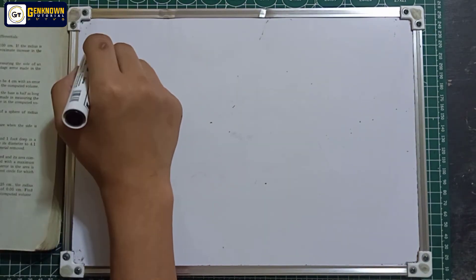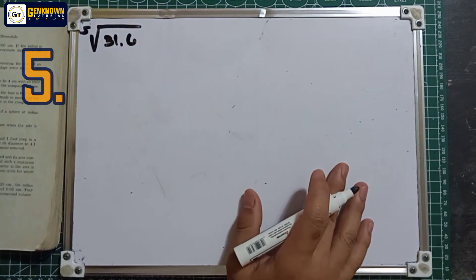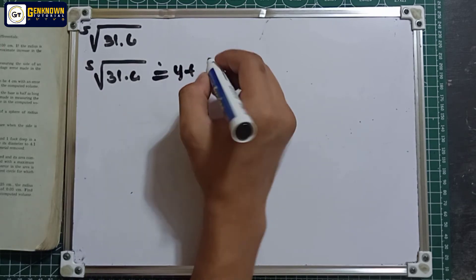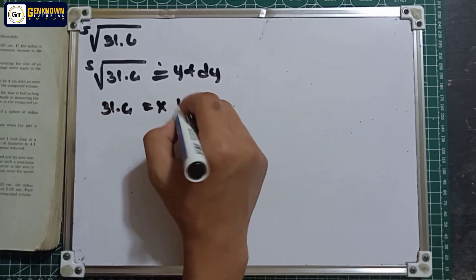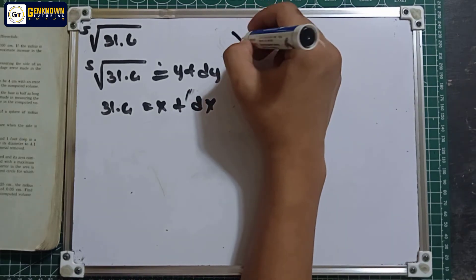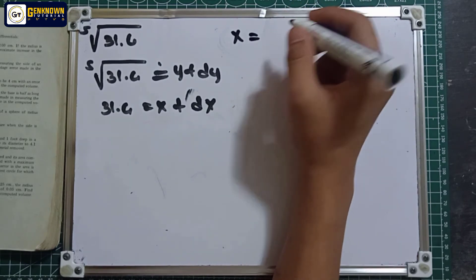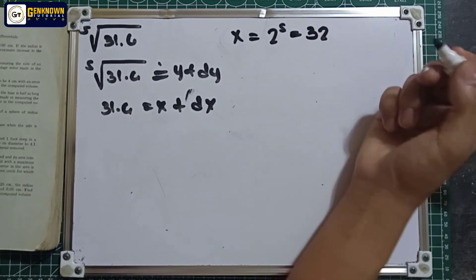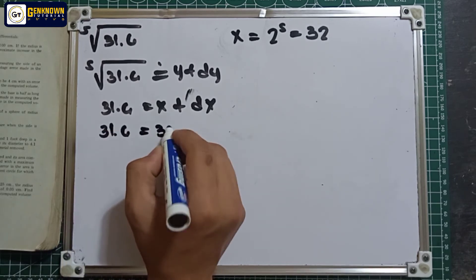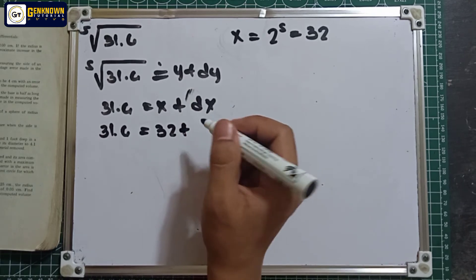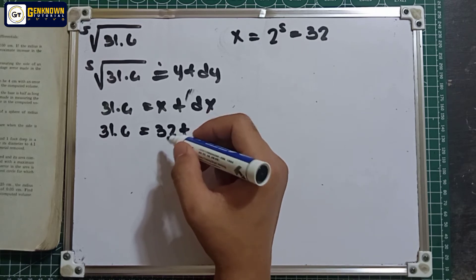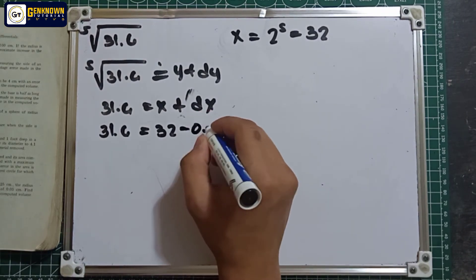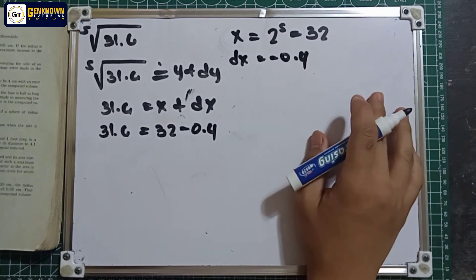Number 5: the fifth root of 31.6. Let the fifth root of 31.6 be approximately equal to y plus dy, and 31.6 equals x plus dx. The value of x is any number raised to 5 nearest to 31.6. Since 2 raised to 5 equals 32, we use x equals 32. Then dx equals 31.6 minus 32 equals negative 0.4.